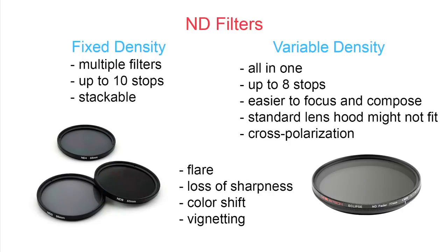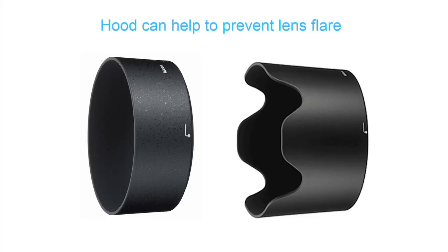Keep in mind that variable density filters are usually bigger and a standard lens hood might not fit when you have this filter on your lens, though you can buy a hood designed for that specific filter. A hood can be very useful for these filters because they have a tendency to create pretty bad flare from the sun — not the pretty flare we sometimes add to a photo on purpose, but a nasty flare that creates color shift, loss of sharpness, and loss of contrast in the image.